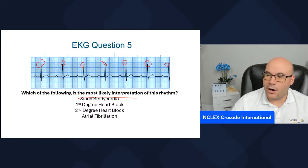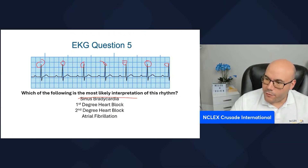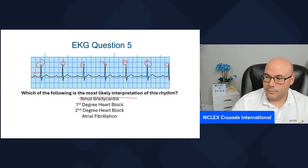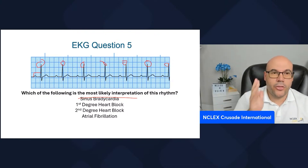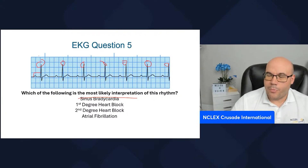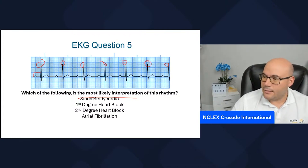What about the PR interval? We measure the PR interval from the beginning of the P wave to the beginning of the QRS. We see that we have a big square and two small squares — we have seven small squares. That's too long. Remember, it's supposed to be between three and five small squares. We have seven small squares, so we have prolongation of the PR interval, and it is constant on the EKG strip.